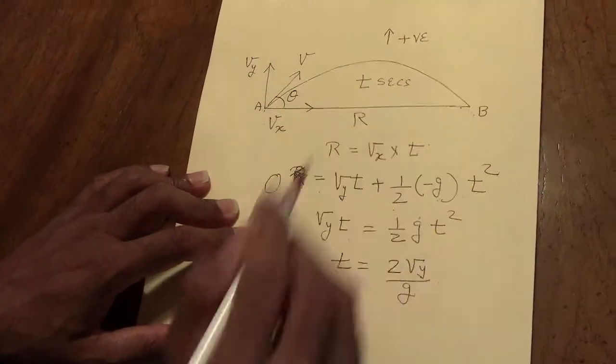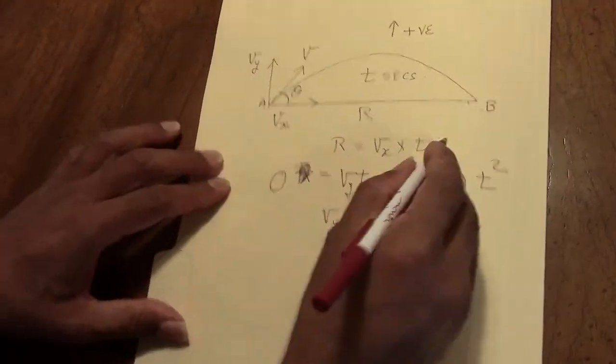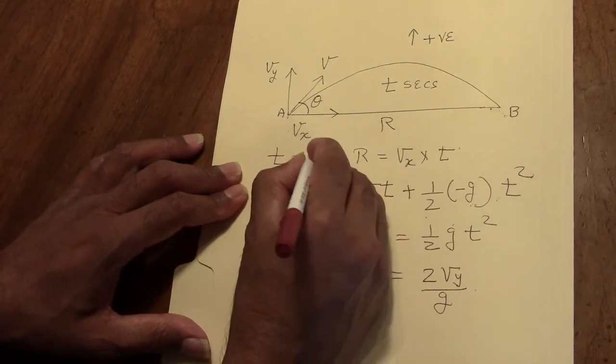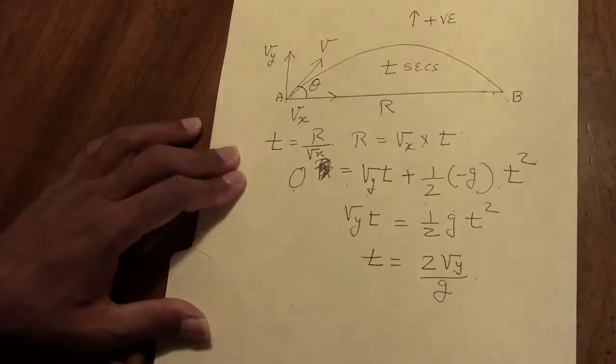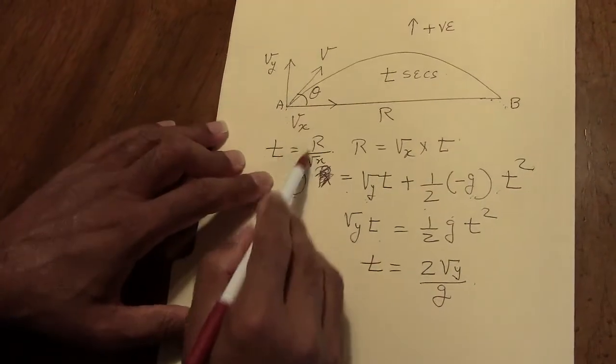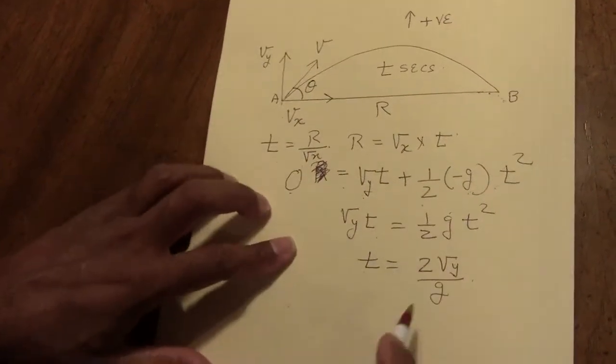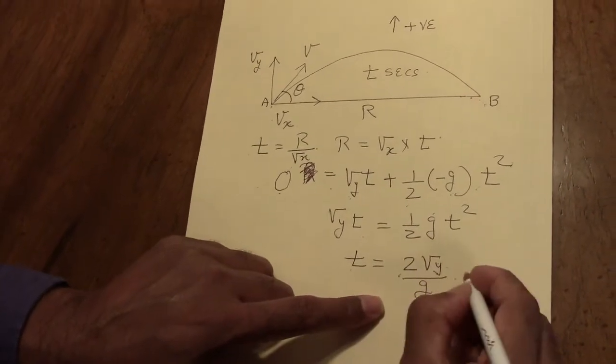Now from this equation we can write that t equals R over Vx. So t is R over Vx, and t is also 2 Vy over g.